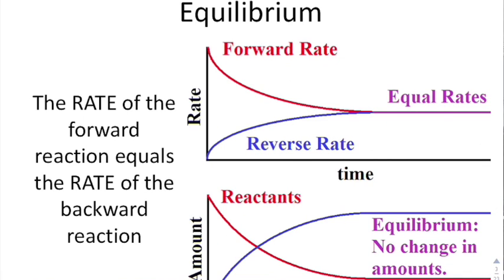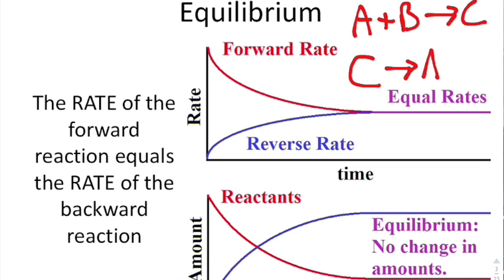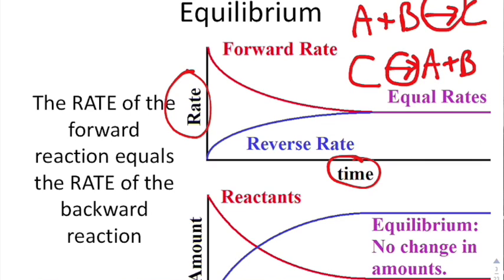Equilibrium is the process in which the forward rate and the backward rate of a reaction are equal. If I have a reaction like A plus B goes to C, you also have the backward reaction of C going to A plus B. Equilibrium is the point where the rate at which you form C and the rate at which you form A and B are equal. You see that represented by the graph of rate and time — they come to a point where they equal out. That is the point at which equilibrium occurs.